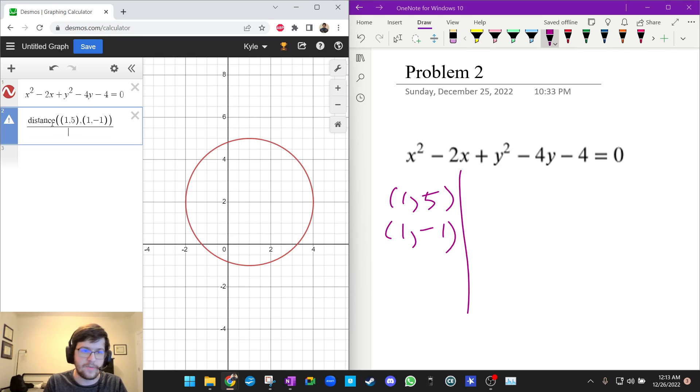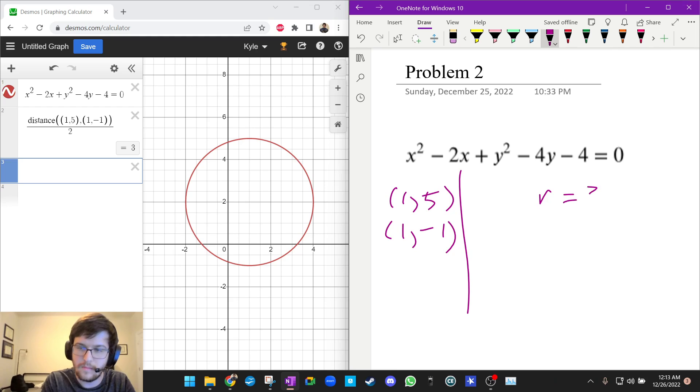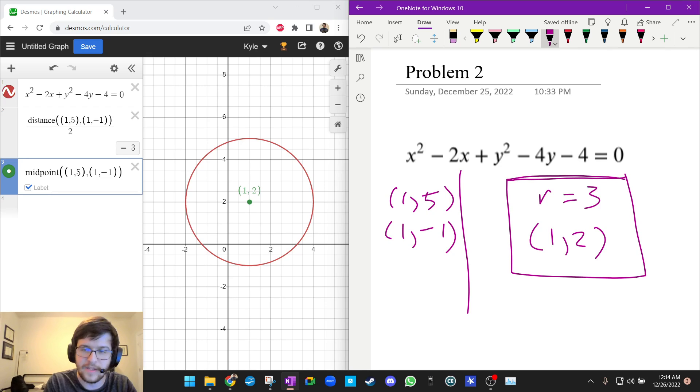And now I'm going to do the distance between 1 comma 5 and 1 comma negative 1. Again just trying to show you guys how to use Desmos. You could just use subtraction to find that. And we're going to divide by 2 to make it a radius. And we get a radius of 3. And for the center we can use the midpoint function. So midpoint of 1 comma 5 and 1 comma negative 1. And we label it and it tells us that the center is 1 comma 2. And that's the answer to this one. The question asks you to find the center and the radius.